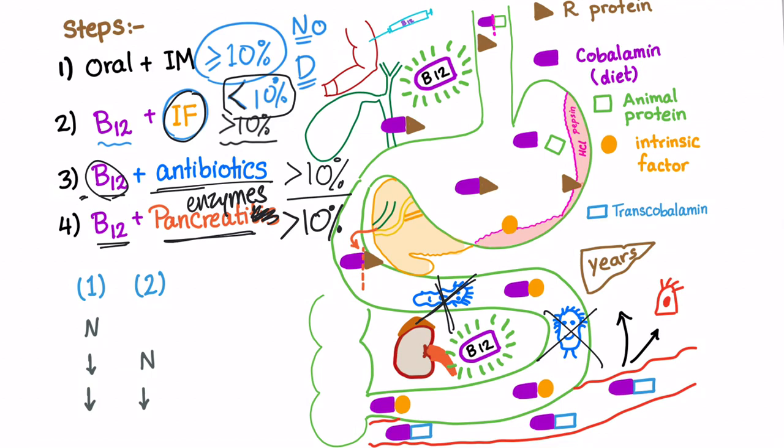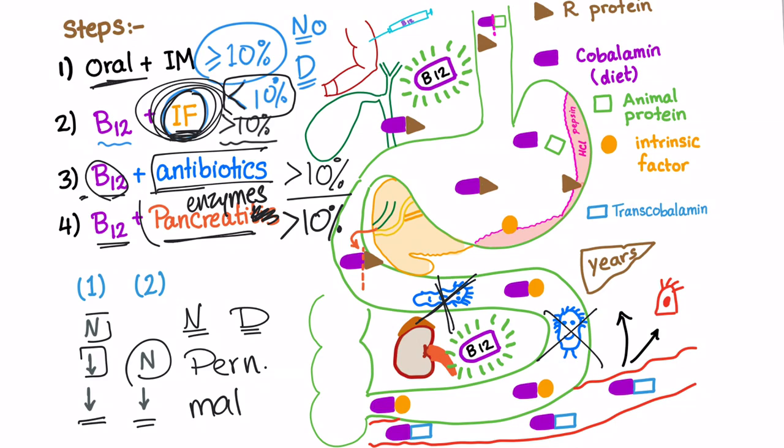So in summary, if the first step was normal, it's either a normal patient or a dietary deficiency. If the first step was decreased, so we have less cobalamin in the urine, however the second step normalized it, this is pernicious anemia. If both first step and second step yield less B12 in the urine, this is malabsorption.